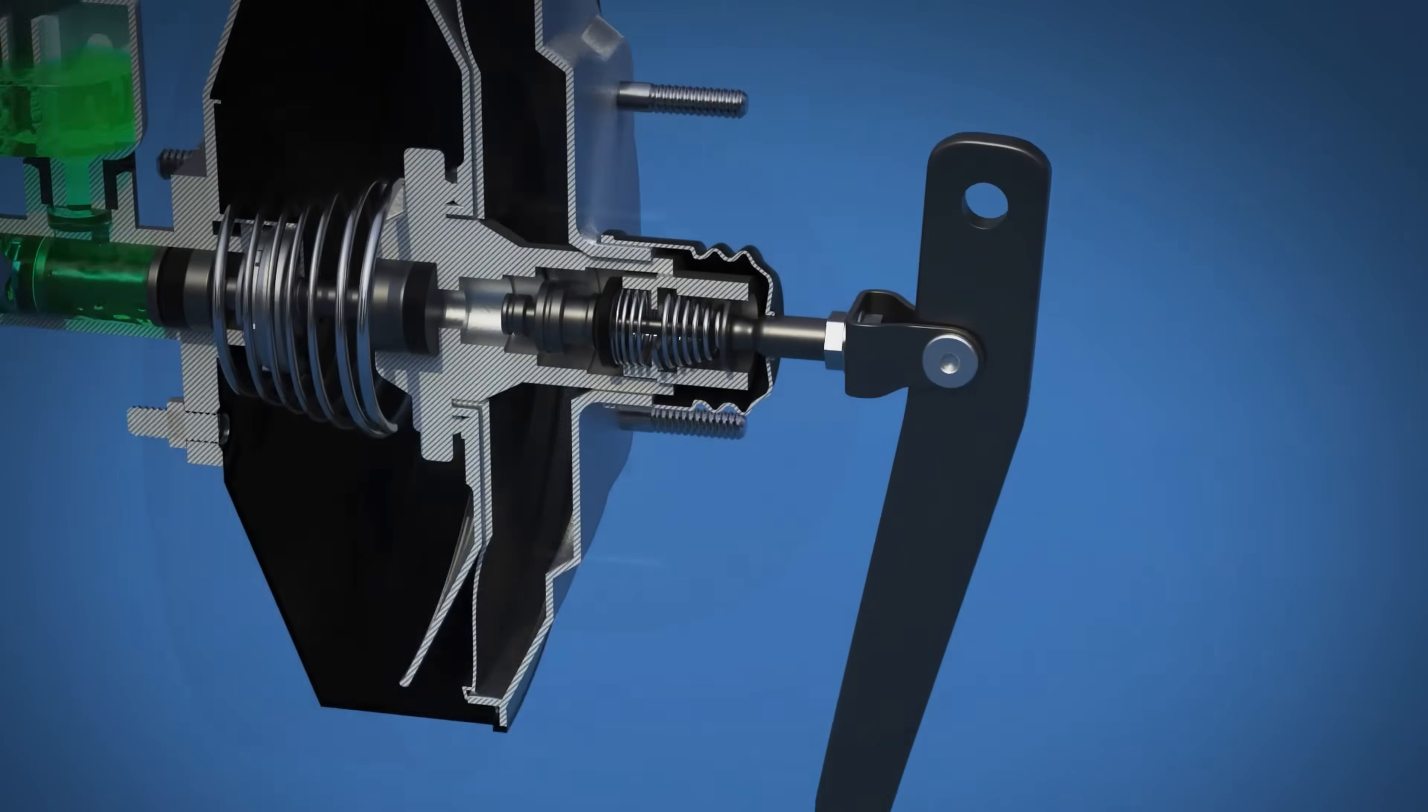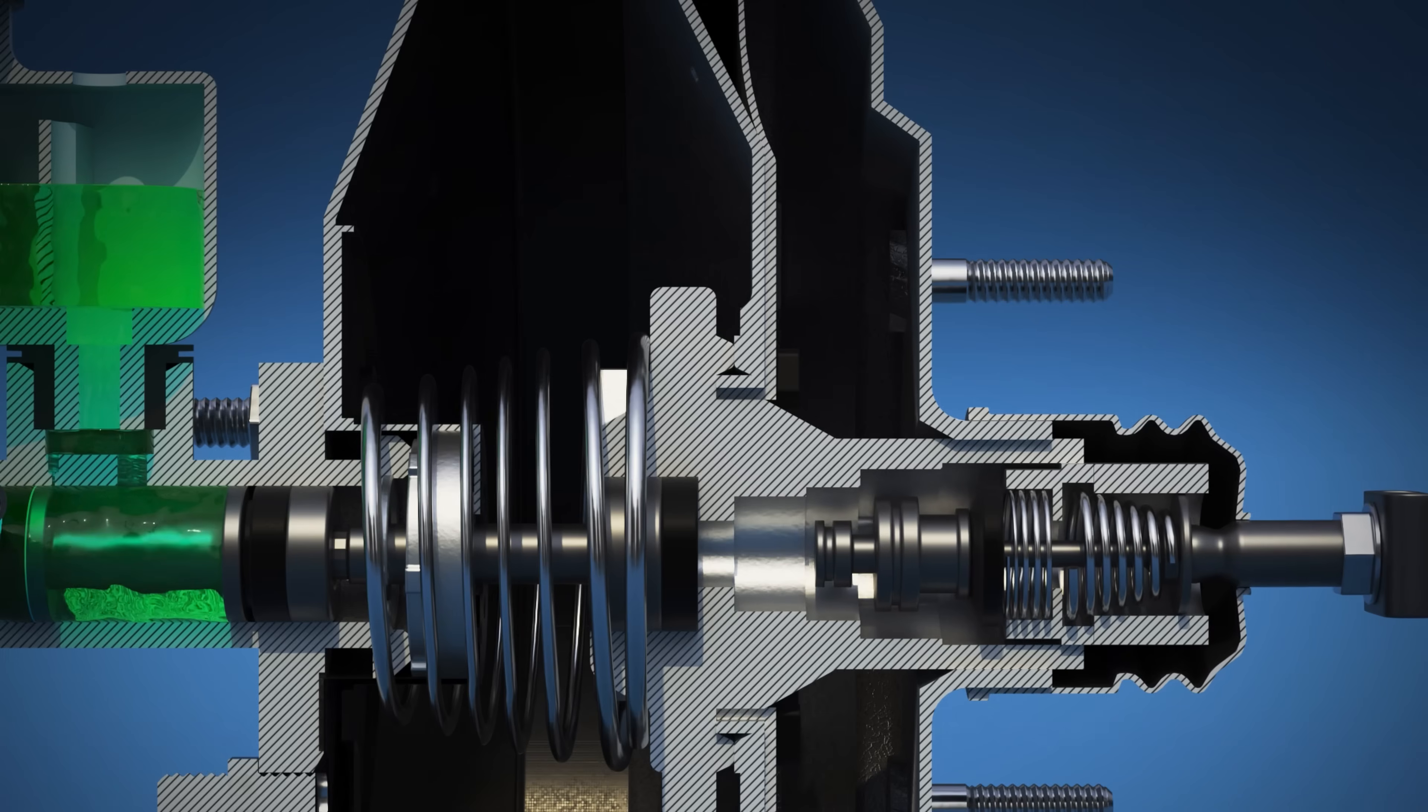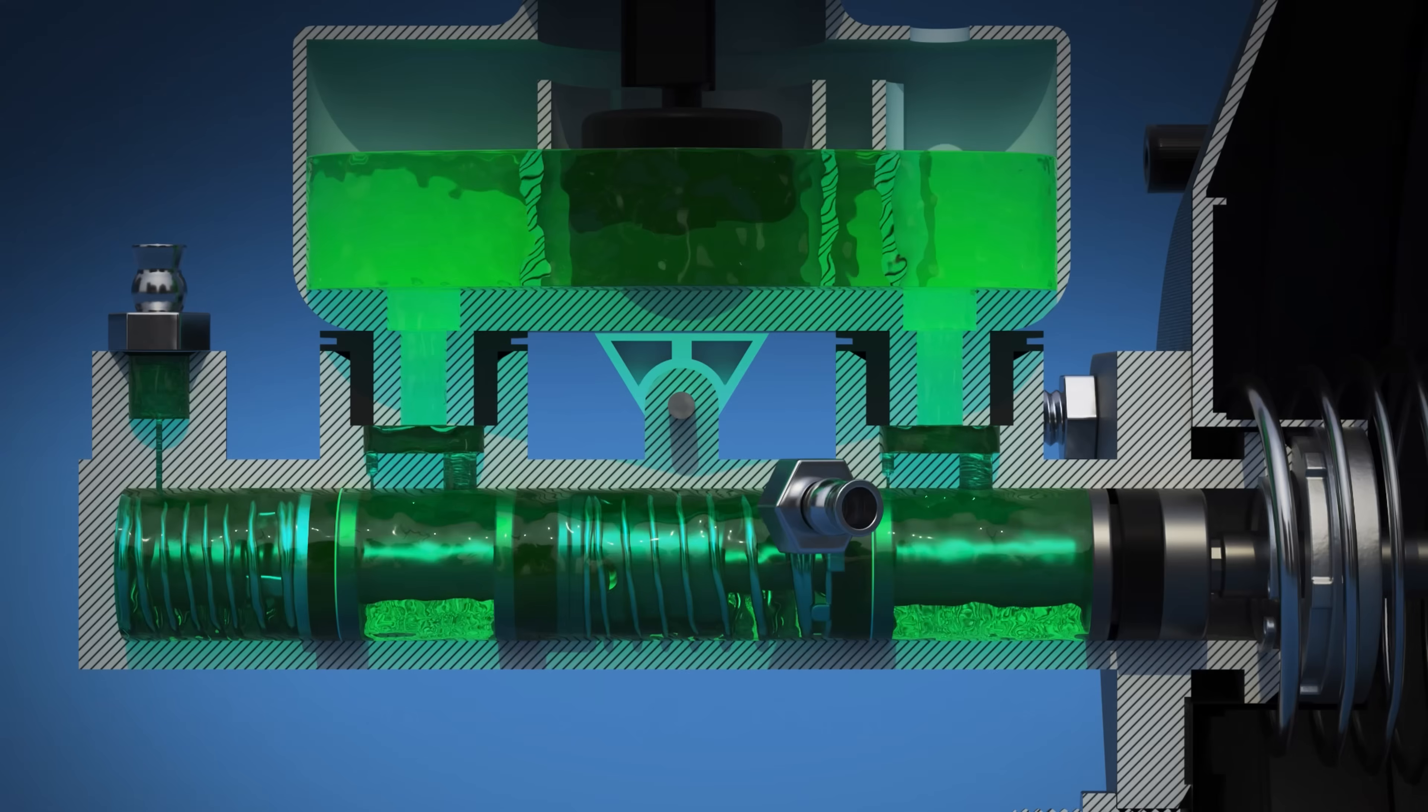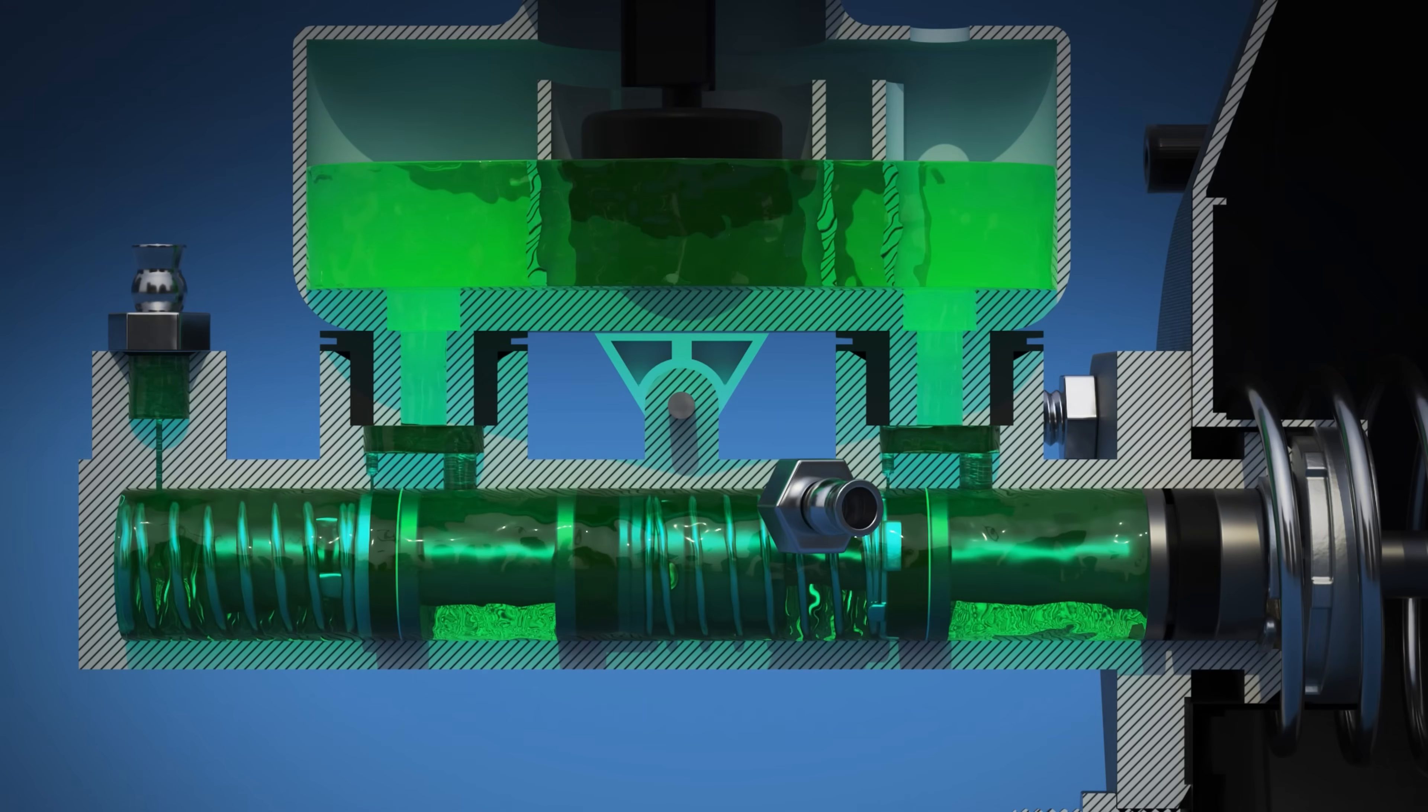When the brake pedal is released, the pushrod connected to the brake booster and the master cylinder retracts, allowing the piston inside the master cylinder to return to its resting position.